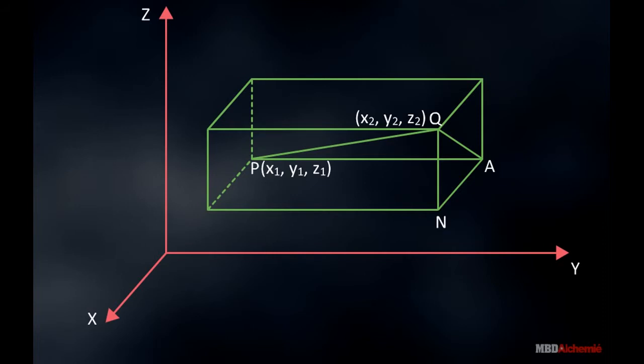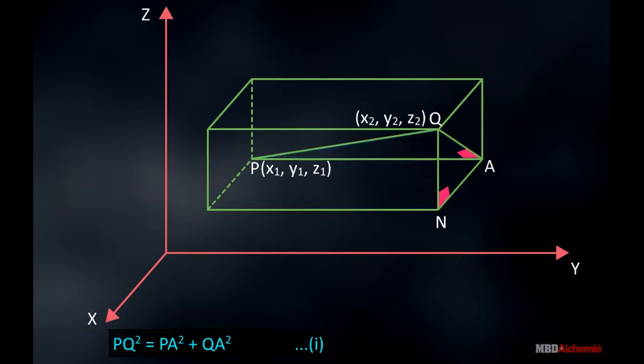We know that the coordinate axes are perpendicular to each other. So, angle PAQ is a right angle. And in the right-angle triangle PAQ, PQ square is equal to PA square plus QA square.